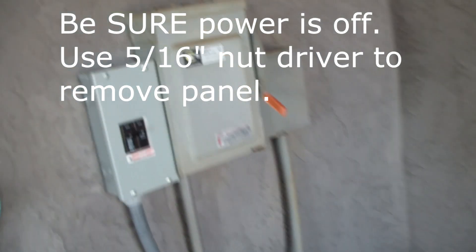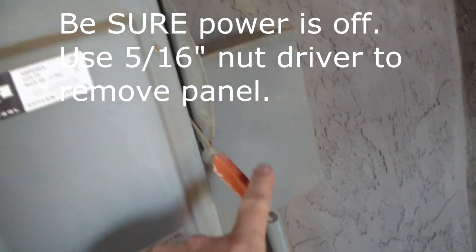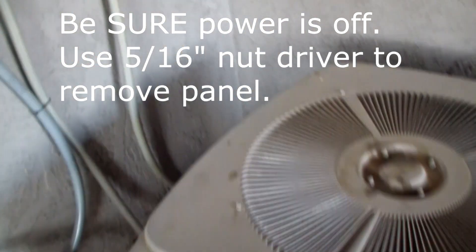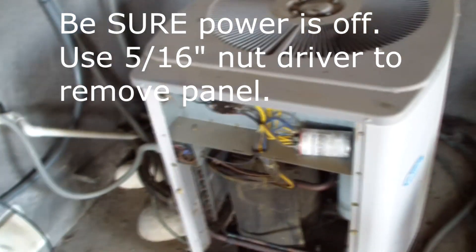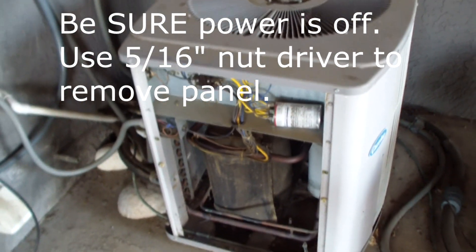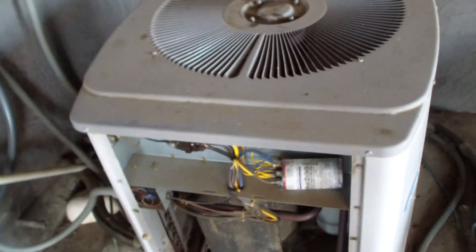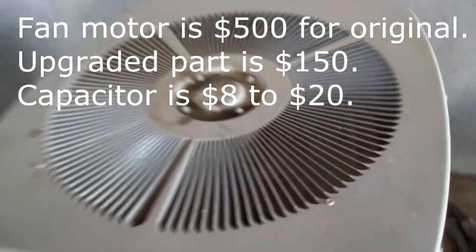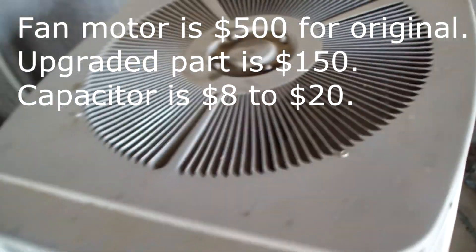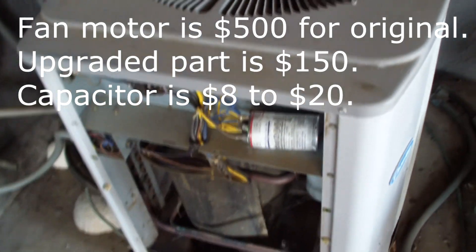So the first thing I did was turn off the main power going in here, the 240 volts going in, and take off the side panel. The plan is, it's either the motor - the motor that blows the fan, this has got a quarter horsepower motor - or the capacitor.